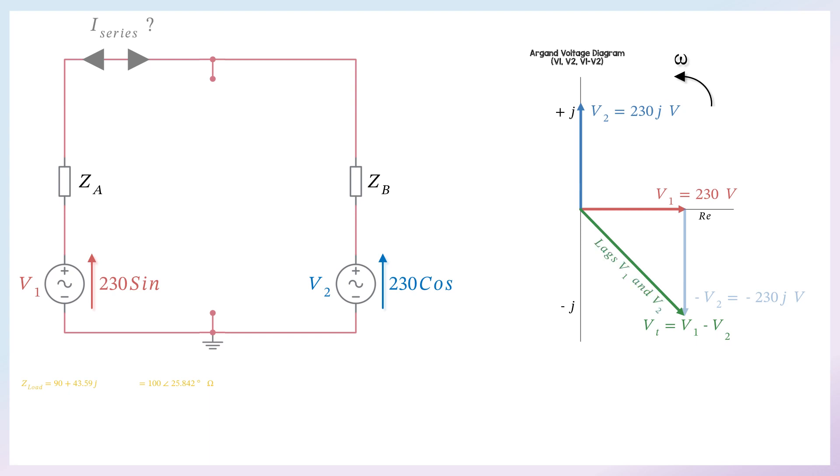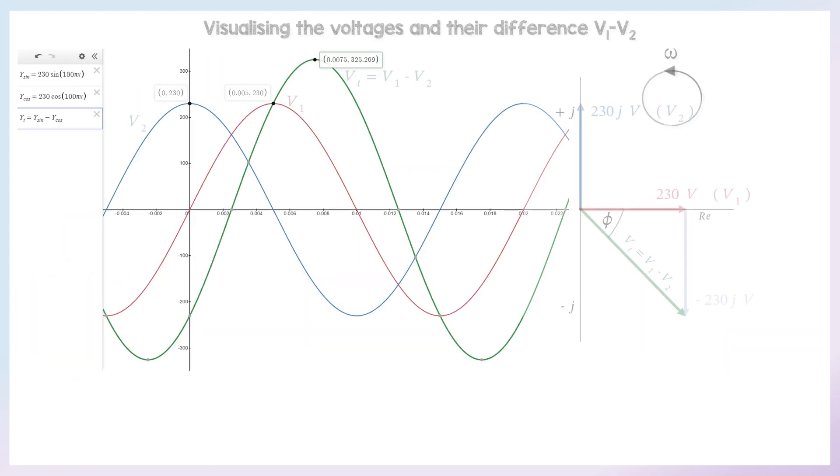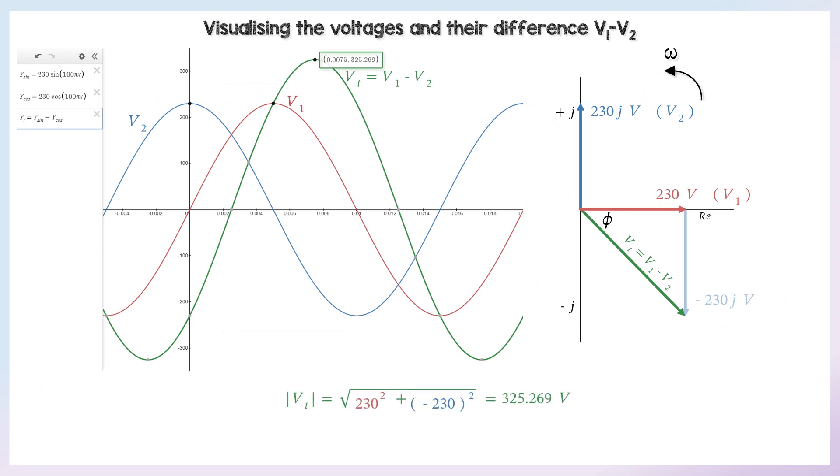And then we can visualize these voltages, because they're both 230 volts. So using Pythagoras, we can find that the total voltage is 325 volts, roughly. And that the phase difference of this circuit is 45 degrees, using arc tan, or tan to the minus one, of opposite over adjacent.